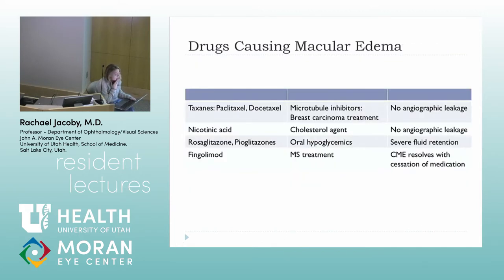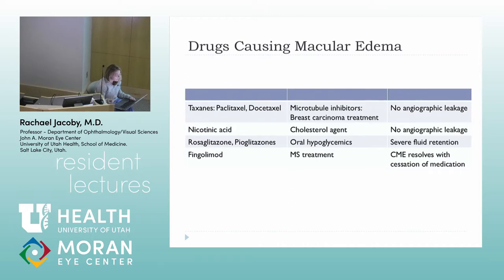Medications can also cause macular edema, so if a patient presents with macular edema without a clear reason, check their medications. Taxanes and nicotinic acid cause angiographically silent macular edema with no leakage on fluorescein angiogram. The glitazones — oral hypoglycemics — can cause severe fluid retention with classic petaloid leakage on angiogram. Fingolimod, a treatment for multiple sclerosis, causes macular edema within a few months of starting, resolving once stopped.